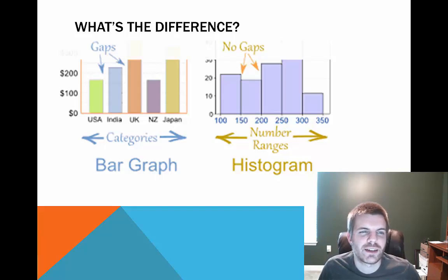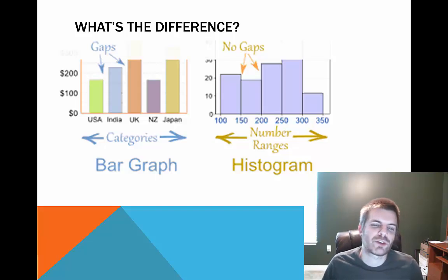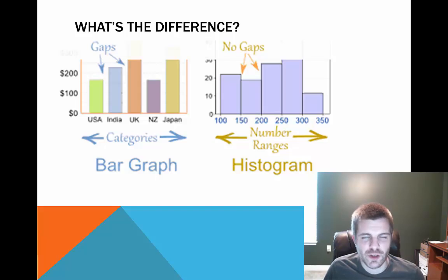And then lastly, just to highlight a difference between bar graphs and histograms. Bar graphs are usually to show categories and they have no gaps between them. In this case, this is looking at some amount of money between different countries. Each country is going to be different. It is not showing a number range without gaps like in the right picture, the histogram. So basically that is the difference. Bar graphs have gaps and they show categories. Histograms, on the other hand, have no gaps and they look at number ranges.